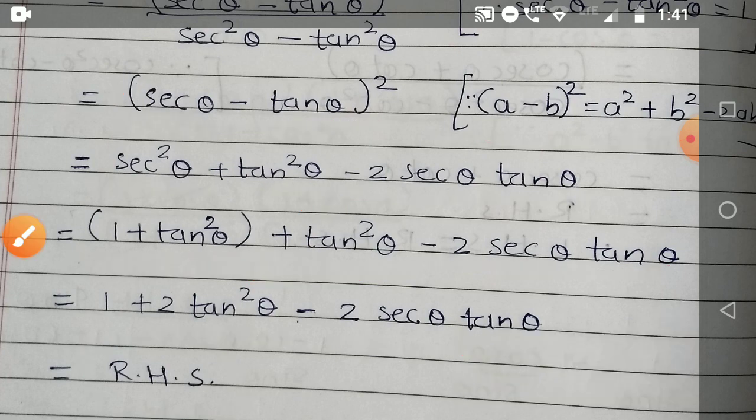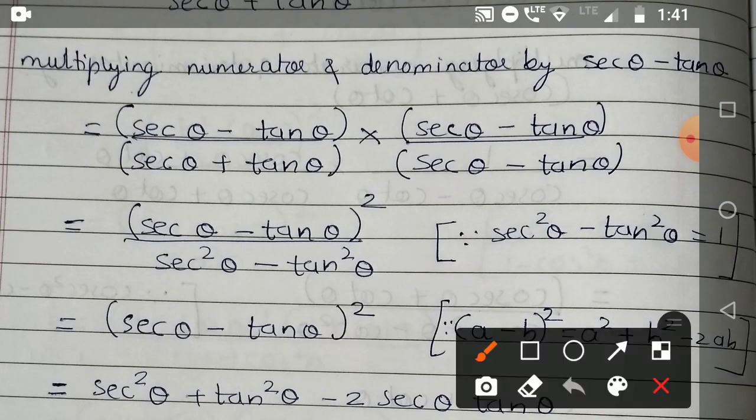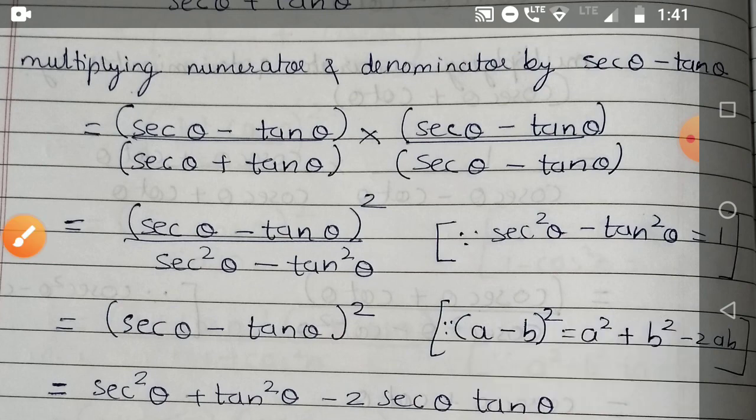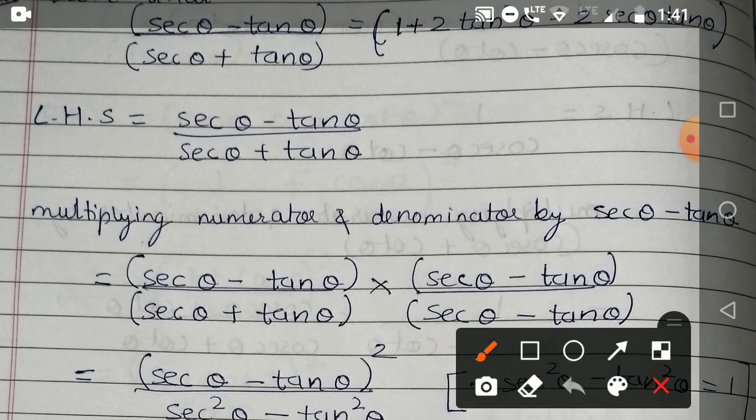How we will decide the approach: we have to look at the RHS, what we have to derive, and with a lot of practice of different kinds of sums, you will come to know which method or how we will start to solve the sums.